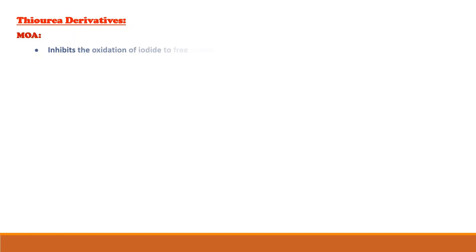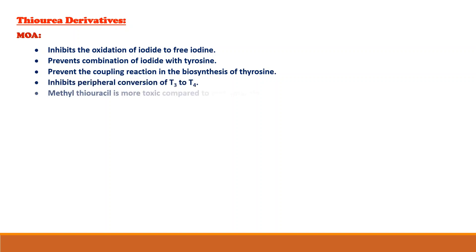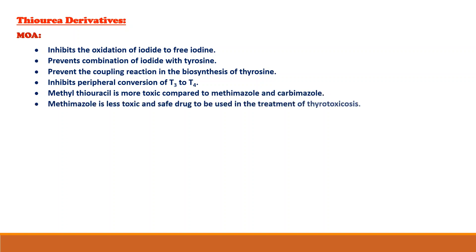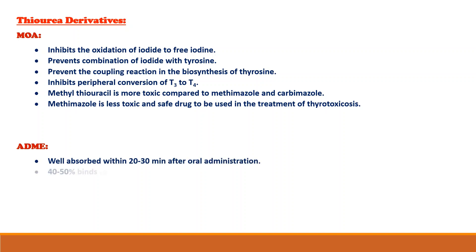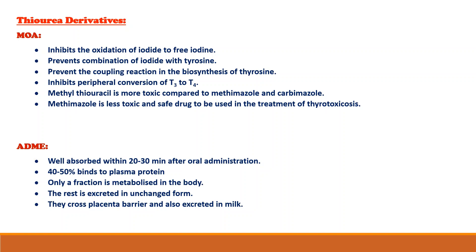Now let's discuss each category of drugs. The first is thiourea derivatives. Their mechanism of action includes: inhibition of the oxidation of iodide to free iodine, prevention of the combination of iodide with tyrosine, prevention of the coupling reaction in the biosynthesis of thyroid hormones, and inhibition of the peripheral conversion of T4 to T3. Methylthiouracil is more toxic compared to methimazole and carbimazole. Methimazole is less toxic and safe to use in the treatment of thyrotoxicosis. Regarding ADME: they are well absorbed within 20–30 minutes after oral administration; 40–50% binds to plasma protein; only a fraction is metabolized in the body, and the rest is excreted in unchanged form. They cross the placental barrier and are also excreted in milk.